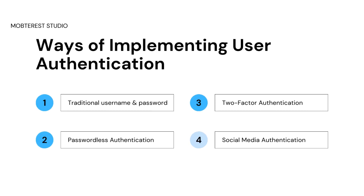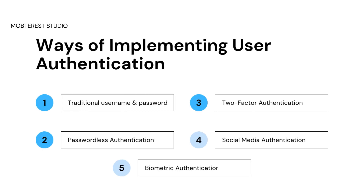Next, we have social media authentication, where we allow users to authenticate using their social media accounts. It offers a lot of convenience and simplifies the registration process. Integration with platforms like Facebook, Google, or Twitter enables users to log in with their existing credentials. This type of authentication uses OAuth 2.0 and OpenID Connect protocols to facilitate secure authentication and authorization. To learn more about OAuth, visit the link in the description box below.